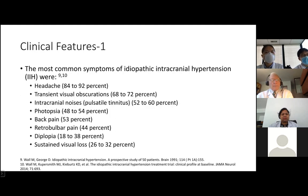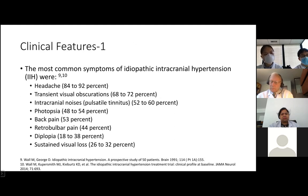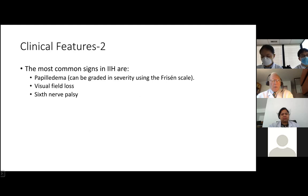The most common clinical features are headache, transient visual obscurations such as grey vision and blurred vision, pulsatile tinnitus, photopsia such as flashes of light, back pain, retrobulbar pain, diplopia, and sustained visual loss. The most common signs are papilledema — which can be graded using the Frisén scale, which is important for prognosis — visual field loss, and sixth nerve palsy.